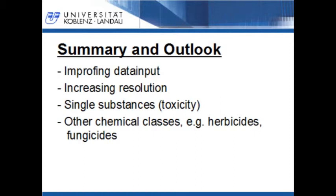As mentioned before, the risk for human health is dependent on more variables than just the applied amount. To create an improved risk map, factors like the toxicity of the used substance must be considered. However, information on the applied substance is often not available, especially for developing countries. It is therefore necessary that statistical data collection on the use of agrochemicals is introduced in these countries. Also, other agrochemicals like herbicides and fungicides influence human health in a negative way, and these should also be considered in modeling the pesticide-induced risk for human health.